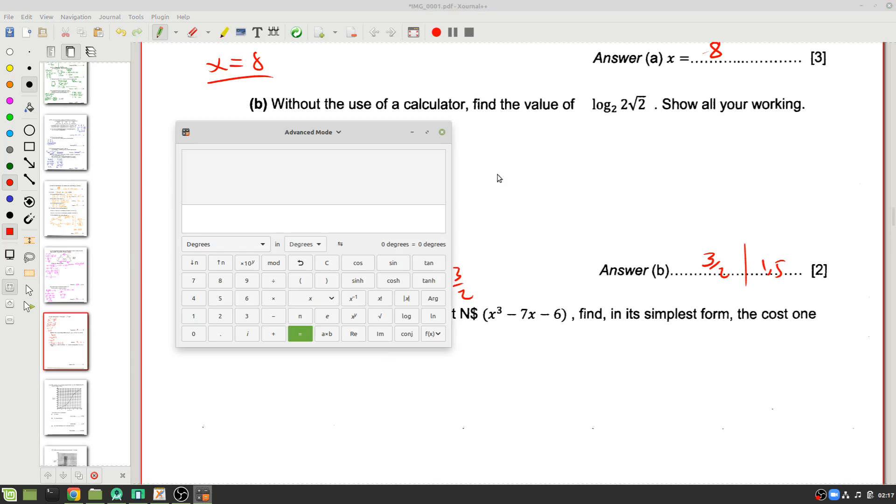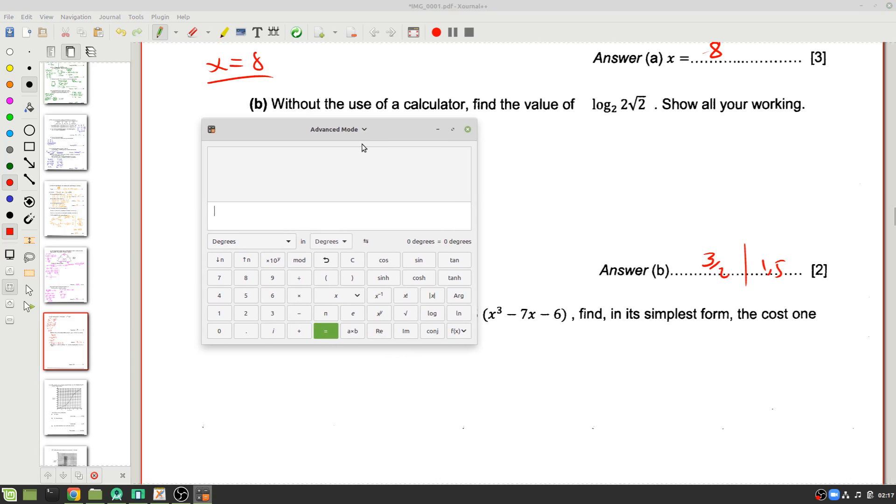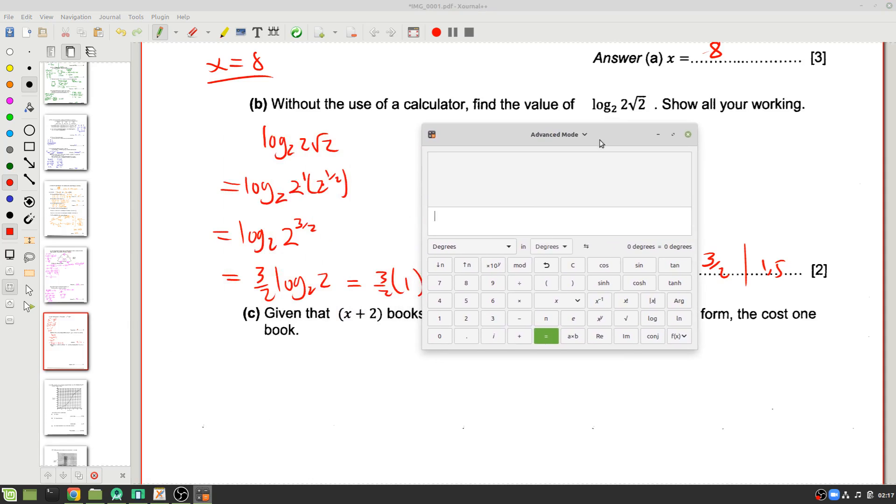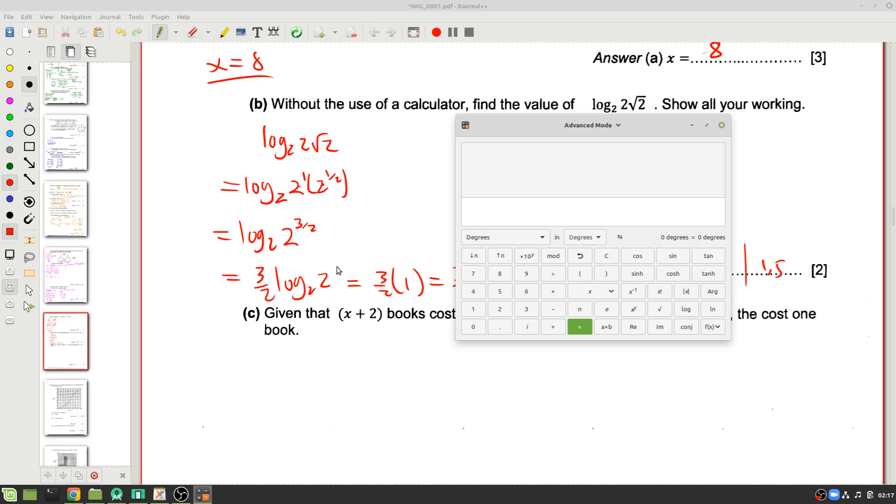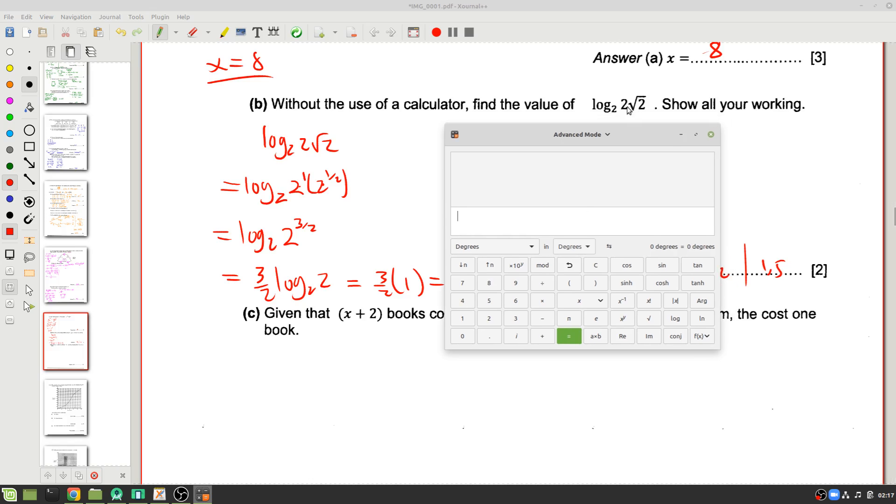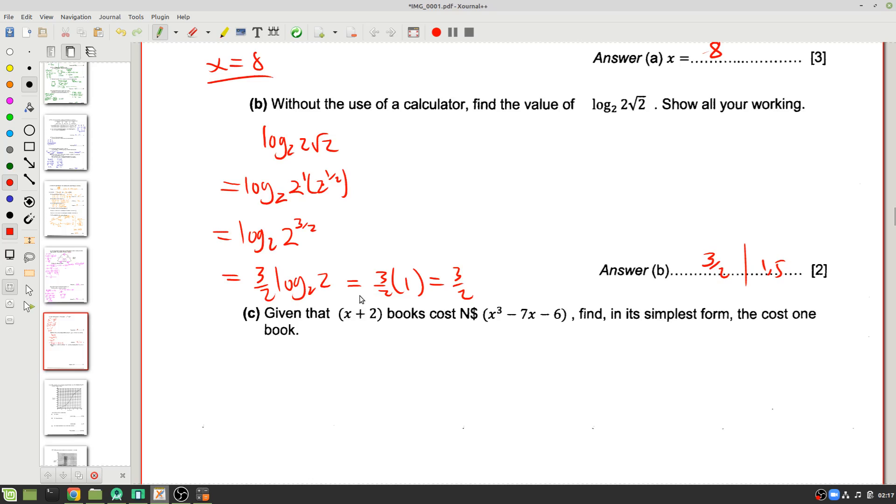And let's just make sure on the calculator. Does that work? We'll write log of 2 times square root 2, so 2 times square root of 2, divided by log of 2. 1.5. Perfect. We see that works out.